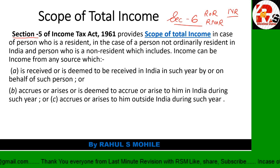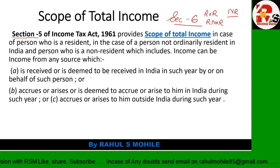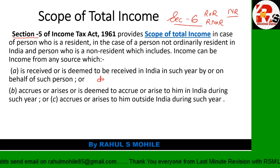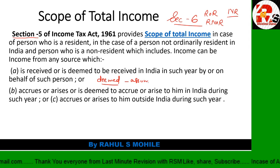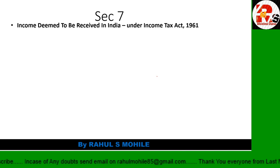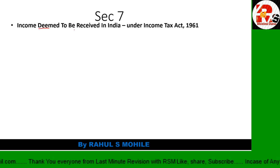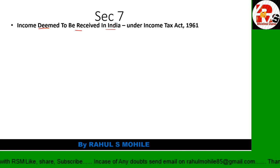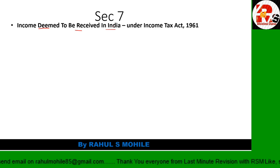Income from any source which is received or deemed to be received in India in such year by or on behalf of such person, or accrues or arises - this is presented in a simple chart format so you will know exactly which category applies. The word 'deemed' means assumed. 'Accrued or arises in India' will be discussed under Section 7. Section 5 covers Scope of Total Income, while Section 7 covers income deemed to be received in India and income earned in India and sent abroad.